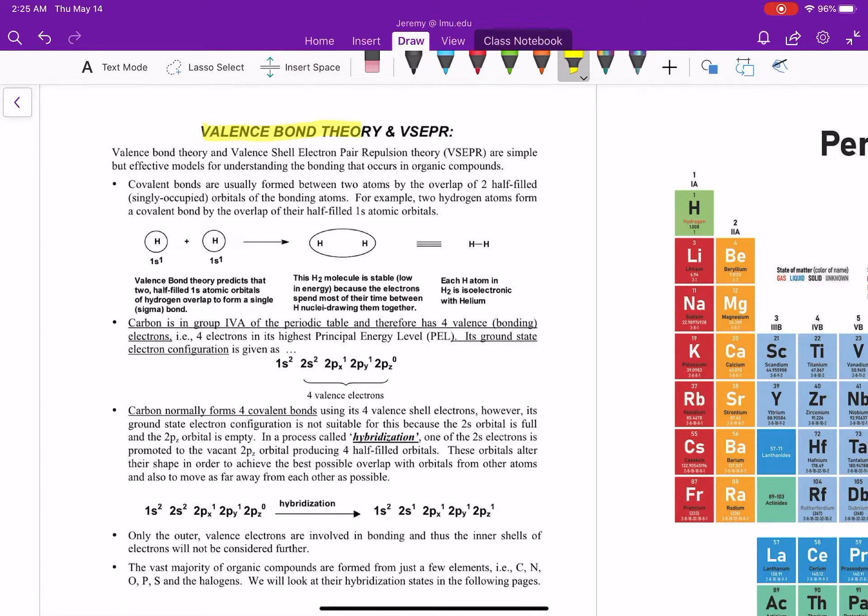So we're going to be talking about valence bond theory and VSEPR. Valence bond theory and valence shell electron pair repulsion theory, or the VSEPR model, are really simple effective models for understanding bonding that occurs in organic compounds. Covalent bonds occur in two atoms when the orbitals are overlapping with each other.